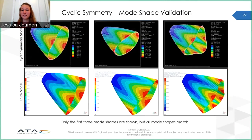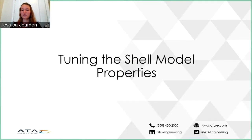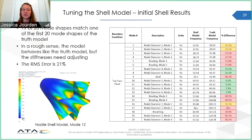The two models also exhibit the same mode shapes for the first 20 modes. The first three mode shapes are shown, with the cyclic symmetry model on top and the detailed truth model on the bottom. Now that we have both the shell and the truth model, we can see how accurate the initial calculations were. The Y-direction properties were only an estimate, so the accuracy can be improved by tuning the properties of the shell model. When the shell model is compared to the truth model, the shell model exhibits most of the right mode shapes but at the wrong frequency. Although some modes are within 1% difference for frequency, others have over 50% difference. The shape behavior is close, but the shell stiffnesses still need to be adjusted.